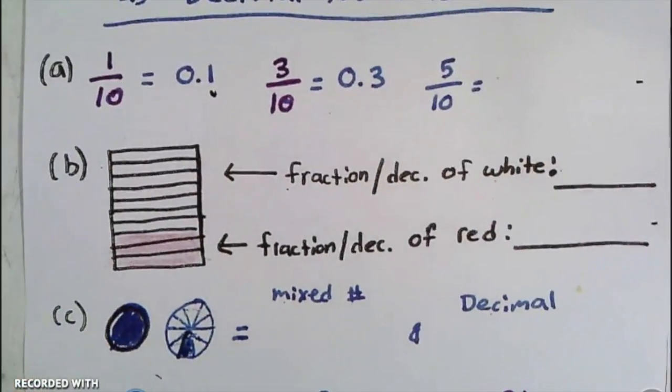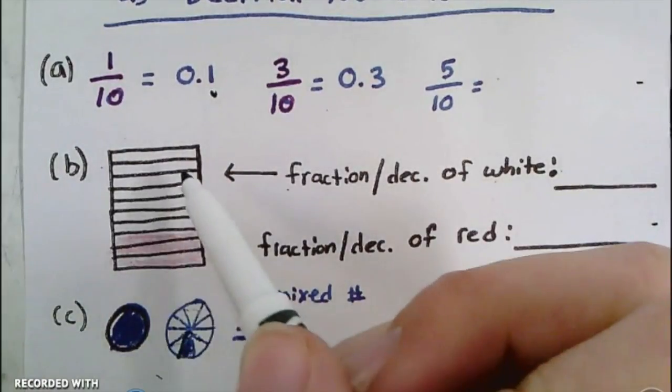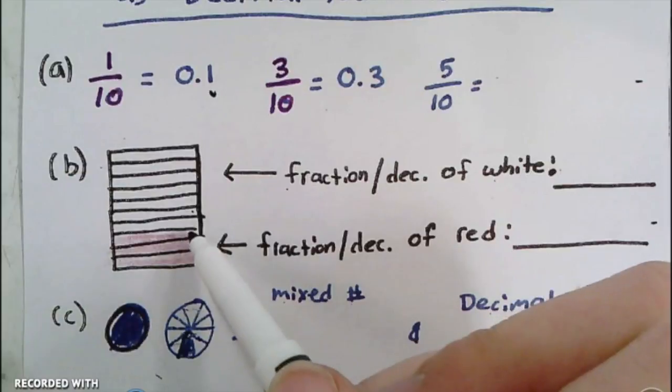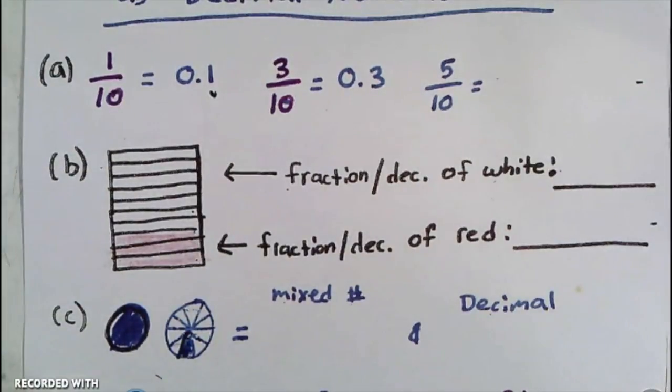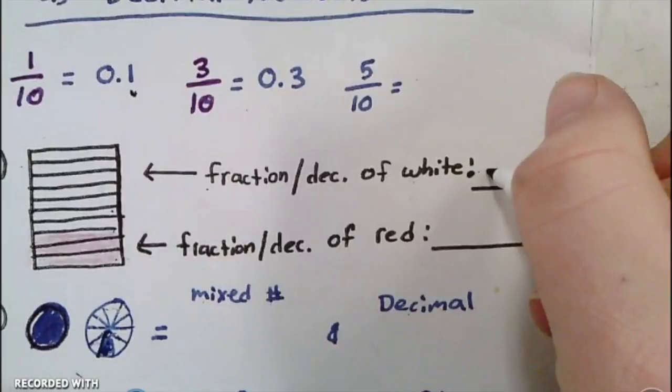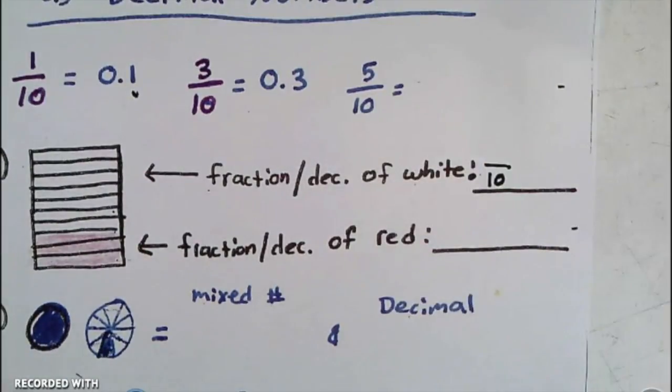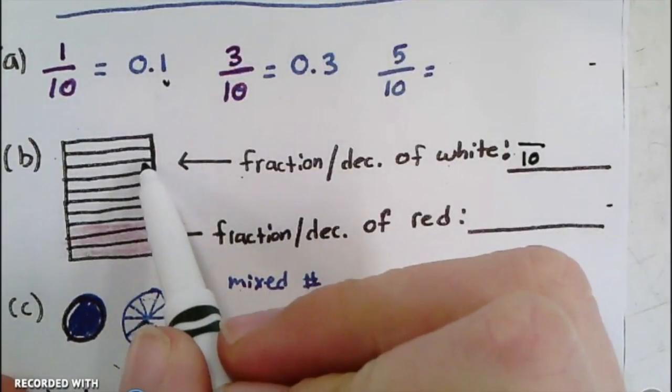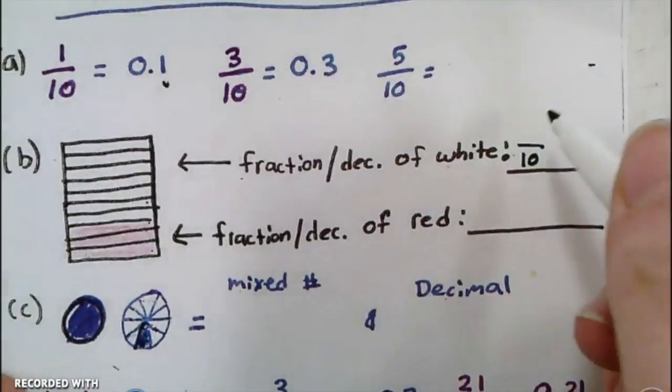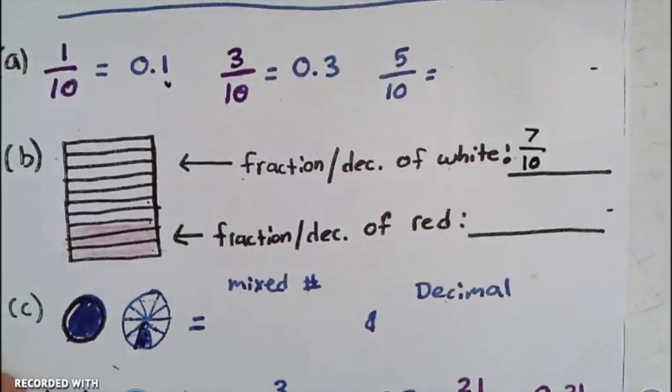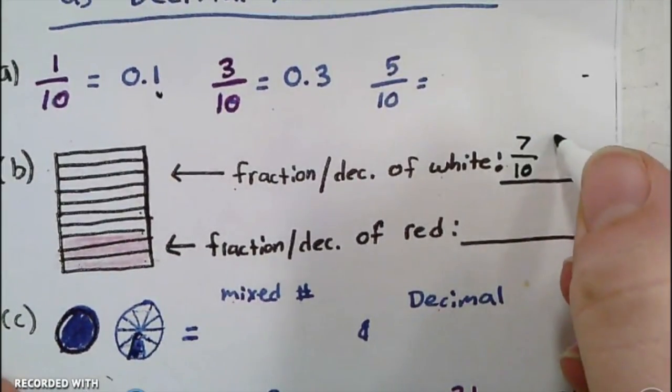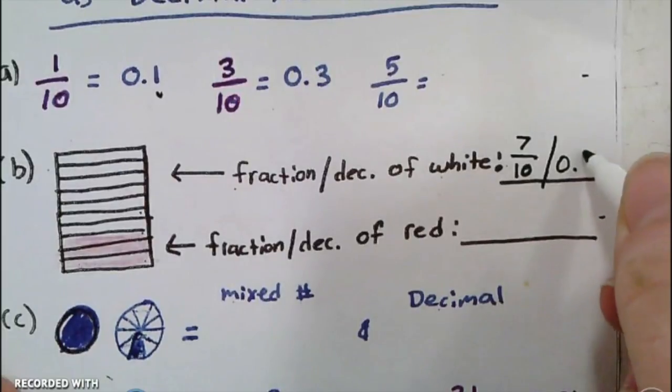For part B, it says find the fraction and decimal of the white parts. I have a figure here with 1, 2, 3, 4, 5, 6, 7, 8, 9, 10 parts total, so I'm going to write that as the denominator. My favorable outcomes, or how many white ones there are, is 1, 2, 3, 4, 5, 6, 7. So as a fraction that's 7/10. What is that equal to as a decimal? 0.7.